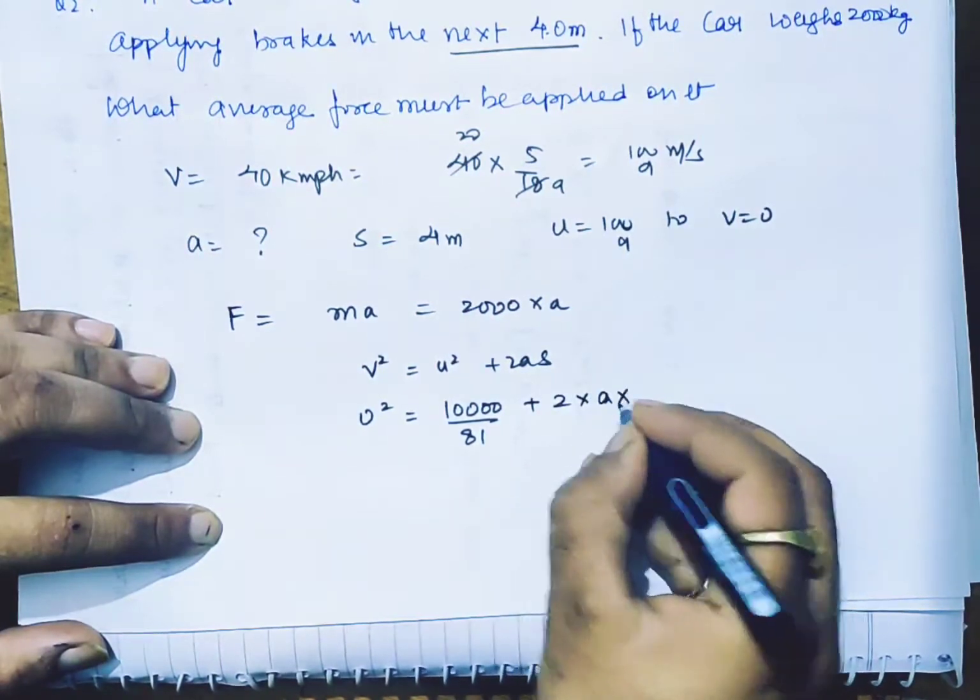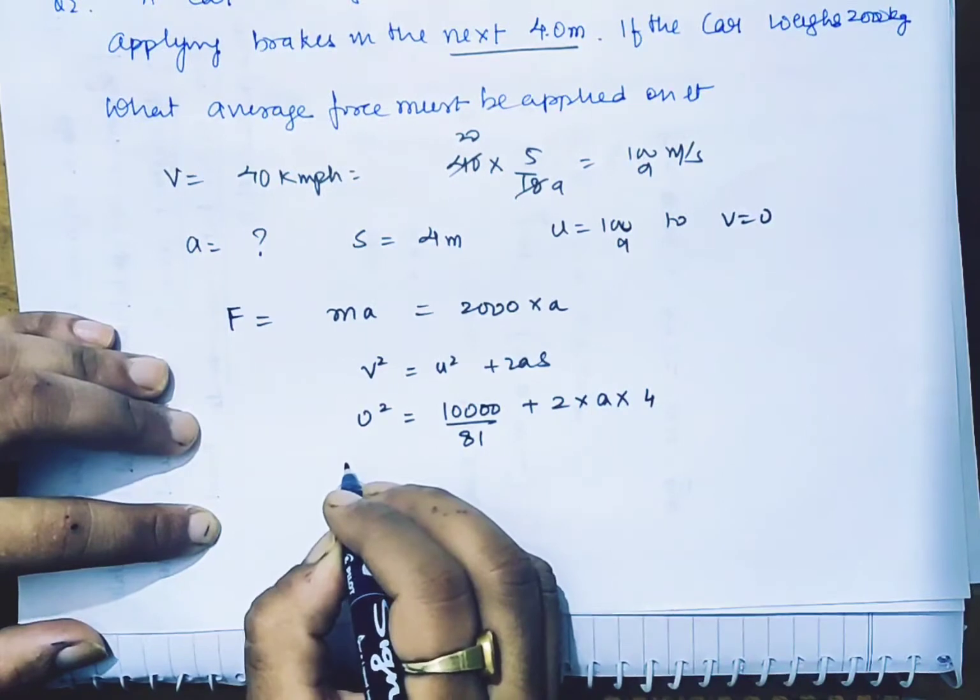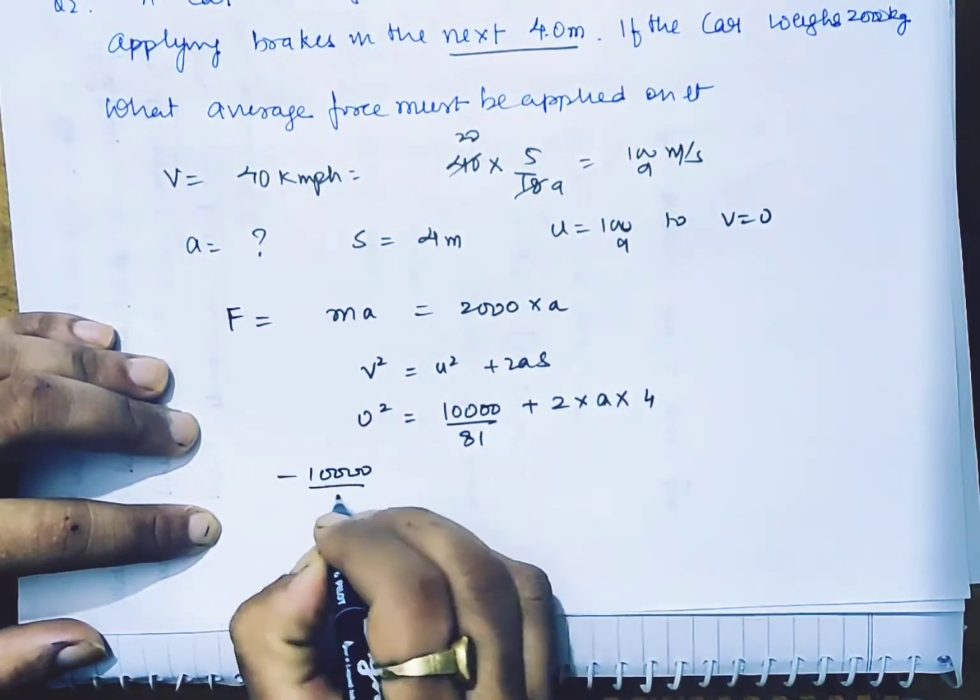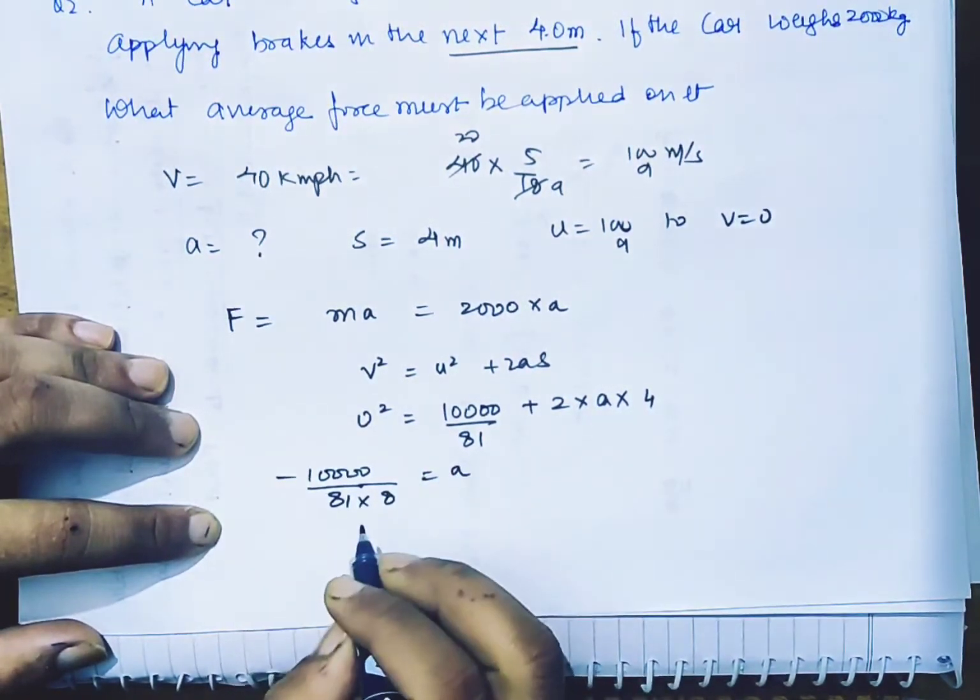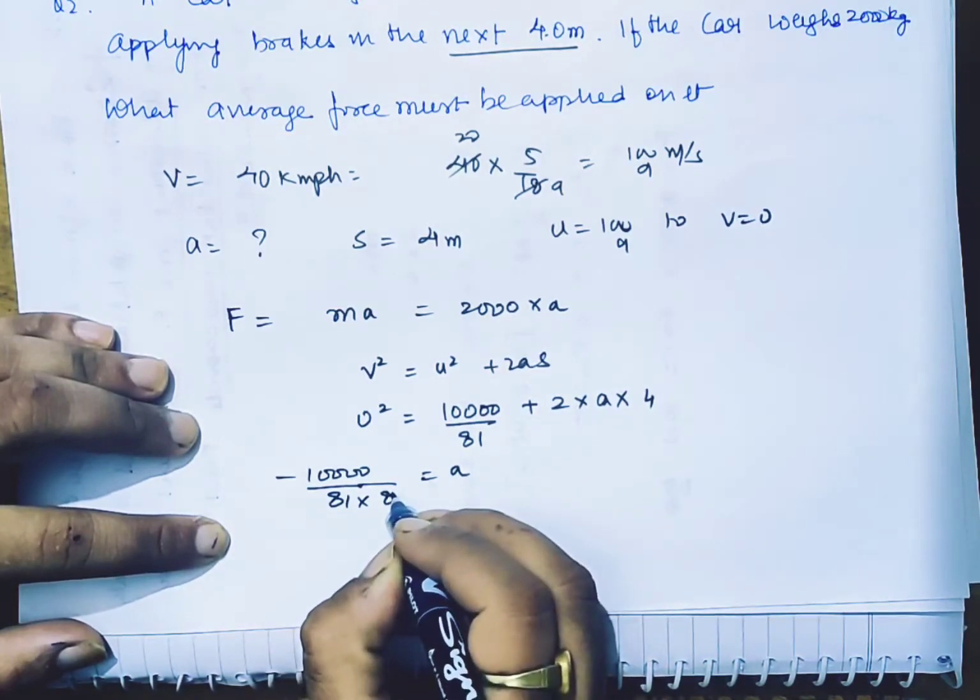2 multiplied by a, which is negative since the car has stopped. 2 times a times 4. So here we will take minus 10000 divided by 81 divided by 8. This will be our acceleration.